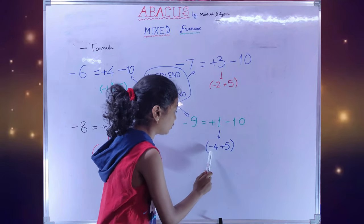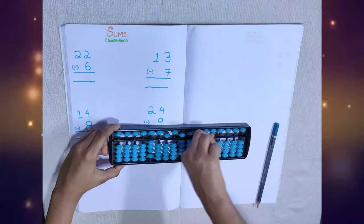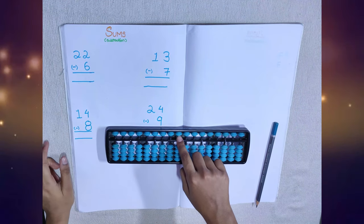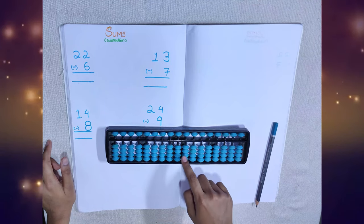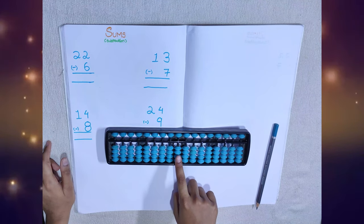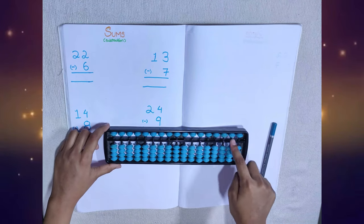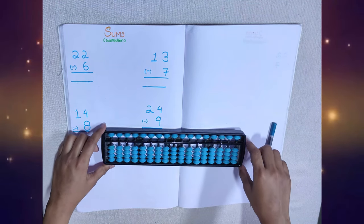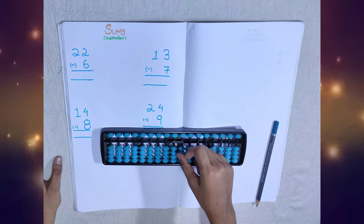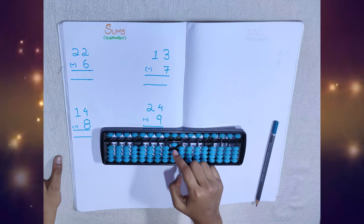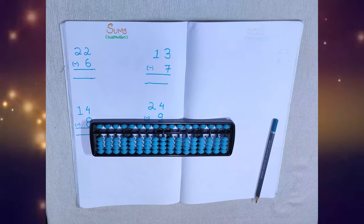Let's clear the scale. Do you remember what this is? This is an upper bit, and this is a frame. This value is 5, and this value is 1. Let's do some calculations in subtraction using mixing formulas.